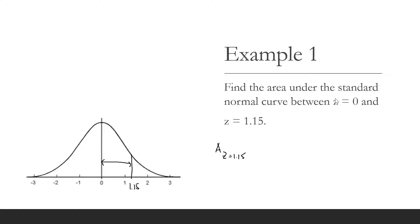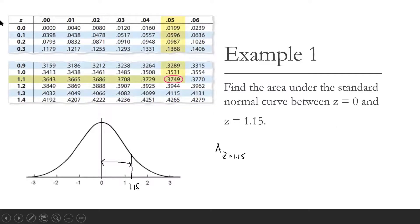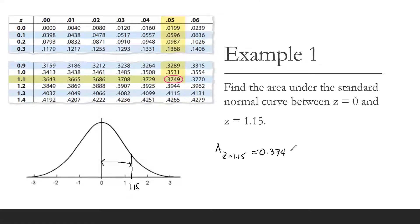We will be using the normal distribution table. Find 1.1 in the left column and then move across the row to the column under 0.05. The number in that row is the area that corresponds to z equals 1.15, and that is 0.3749. So the area between z equals 0 and z equals 1.15 is 0.3749.